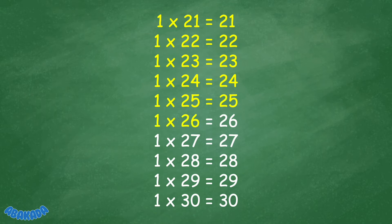1 times 26 equals 26. 1 times 27 equals 27. 1 times 28 equals 28. 1 times 29 equals 29. 1 times 30 equals 30.